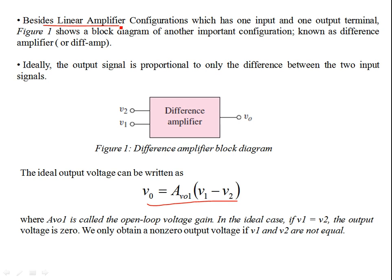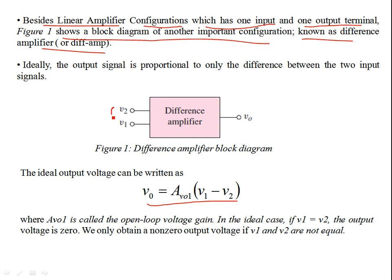Besides linear amplifier configurations like common source and source follower configurations, which have one input and one output terminal, a differential amplifier has two inputs. Figure one shows the block diagram of this important configuration, known as a difference amplifier. We have two inputs and one output, and this output is basically amplifying the difference of the two inputs.